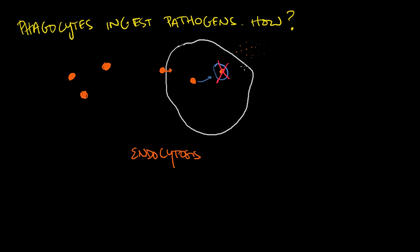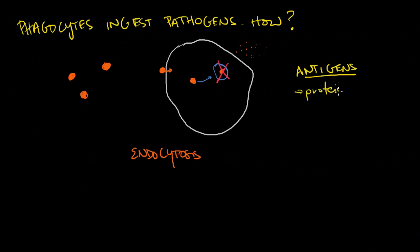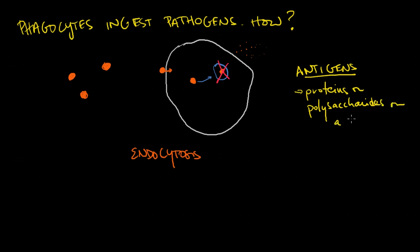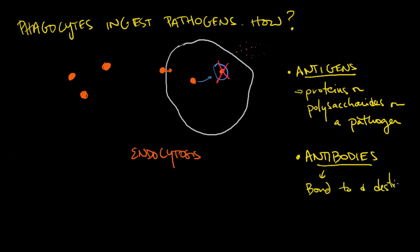The way that this recognition occurs is through antibodies and antigens. Antigens are proteins or polysaccharides on a pathogen. When they're in our body, especially the first time, your body has to recognize them and make antibodies that bond to and destroy antigens. Once you've been exposed to an antigen and created an antibody, if you're re-exposed, your body already has antibodies to attack it.